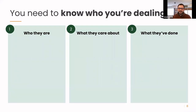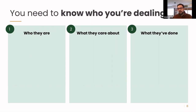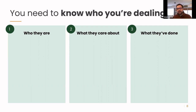The most fundamental reason contact models are important is that you need to know who you're dealing with. You want to know as much as you can about the people you're interacting with, so you can be clear on what you're providing, what they need, and how well you're engaging. I like to break this down into three buckets: you want to know who they are, what they care about, and what they've done in terms of interactions with your organization.